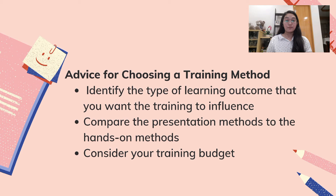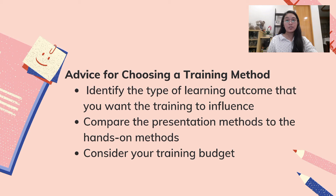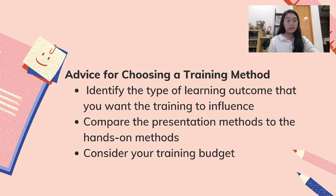The advice for choosing a training method includes three steps. The first step is to identify the type of learning outcome you want the training to influence — determine your objectives, whether it is to improve communication skills, intellectual skills, motor skills, or a combination. The second step is to compare presentation methods to hands-on methods. Presentation methods can accommodate larger numbers of trainees, are less time-consuming, and ensure everyone gets the same information at the same time. Hands-on methods are more interactive, making trainees more engaged and not lacking trainee involvement and practical approach. The last step is to consider your training budget, as it helps in ensuring appropriate funds are allocated for employee development.